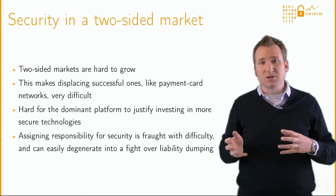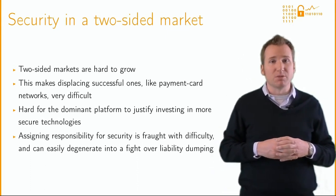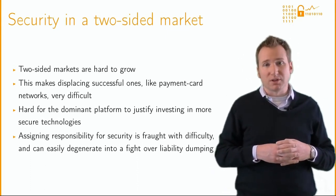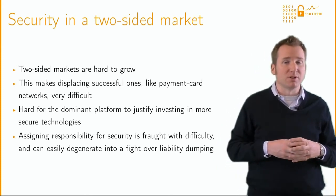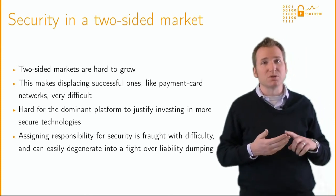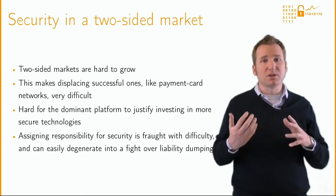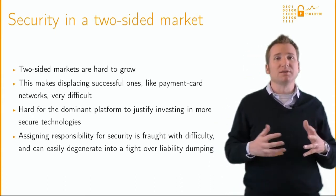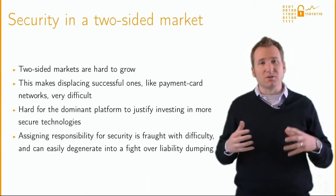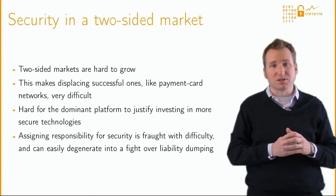The allocation of responsibility for security in a two-sided network is fraught with difficulty because there are so many parties involved: cardholders, merchants, issuers, and acquiring banks. Many of the disputes seemingly about security in these systems often degenerate into a fight over who should bear liability for reimbursing fraudulent transactions.